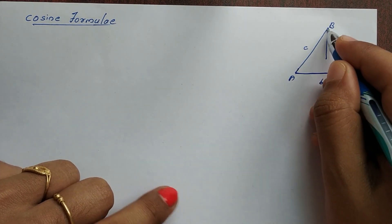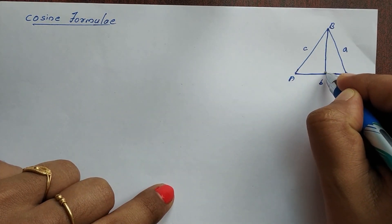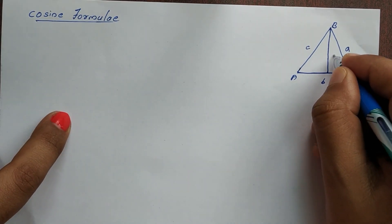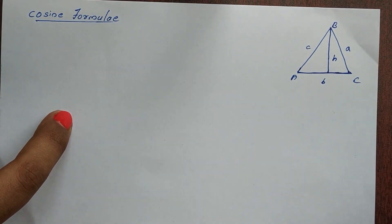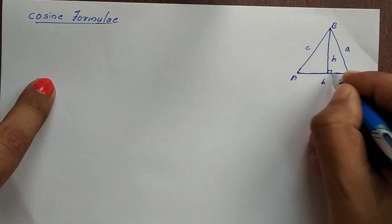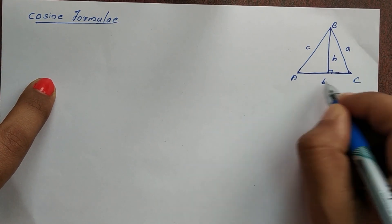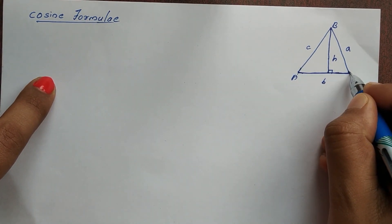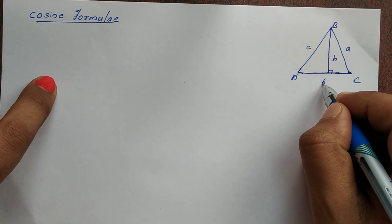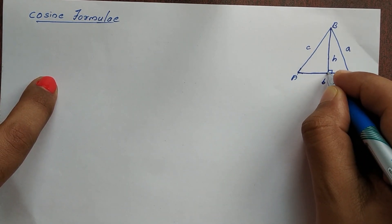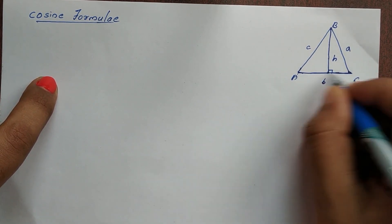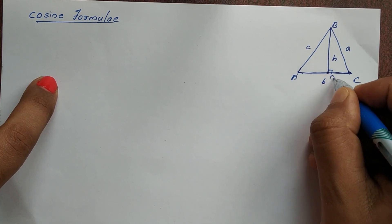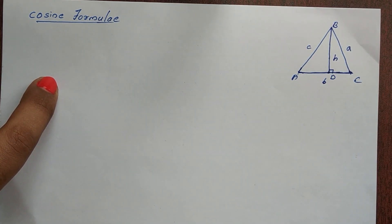Now we draw a perpendicular. This perpendicular is H, and the foot of the perpendicular is point D. D is on side AC, so D is perpendicular to AC. We join this perpendicular from B down to D.